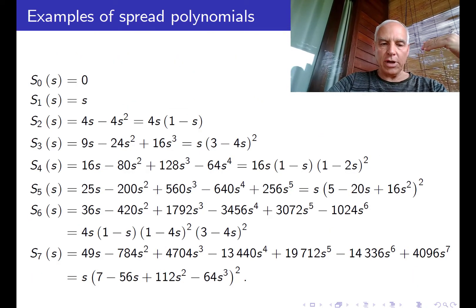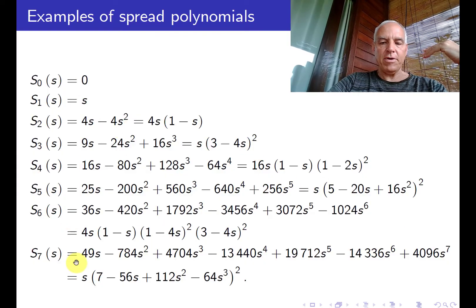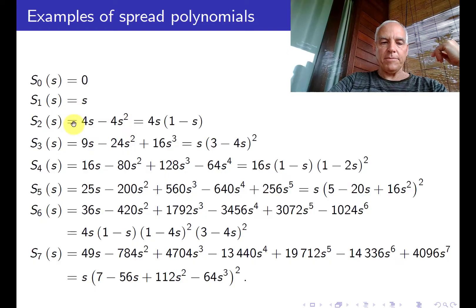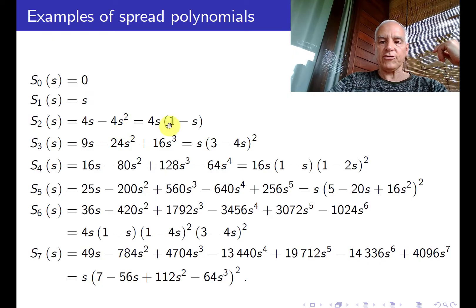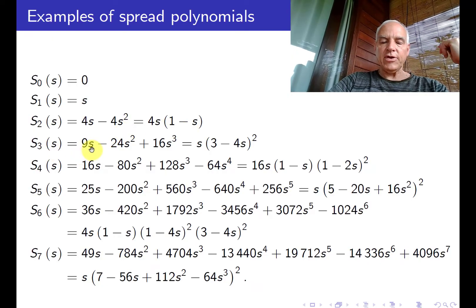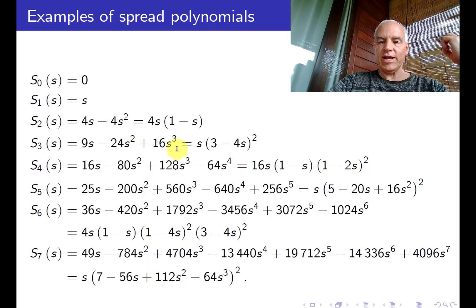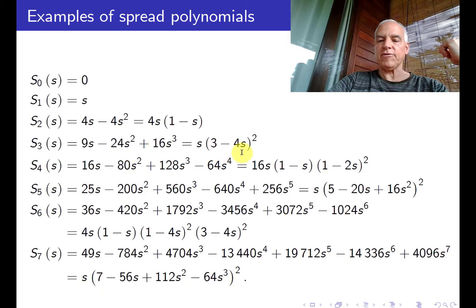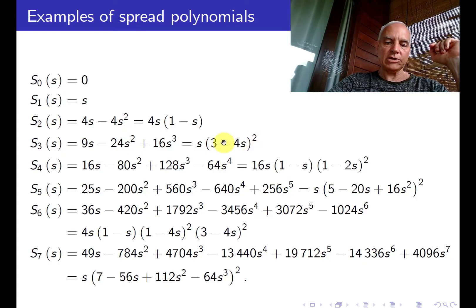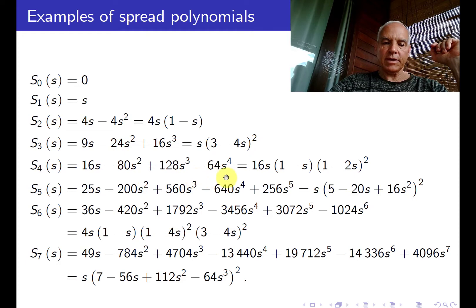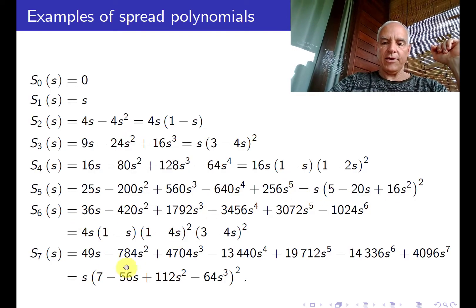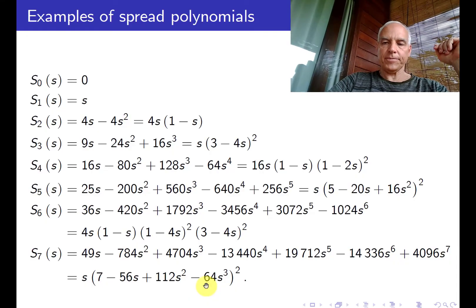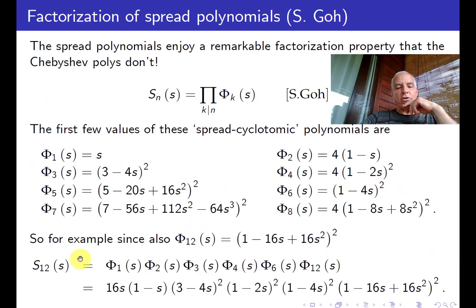Here we are seeing what they actually look like in terms of some lists of them. Here's the unfactored forms. S₀ = 0, S₁ = S, S₂ we've already seen, that's 4S - 4S², that's the logistic map. S₃ = 9S - 24S² + 16S³ which factors as S(3-4S)². Here's S₄ in expanded form and factored form, S₅ in expanded form, factored form, S₆ also, and S₇ to give you a sense of things.